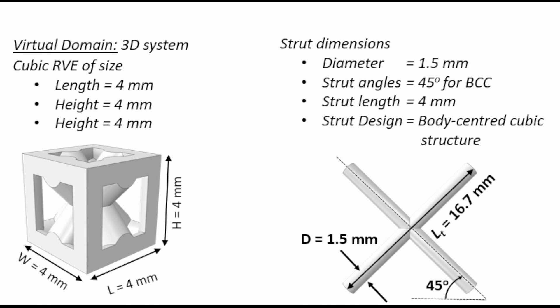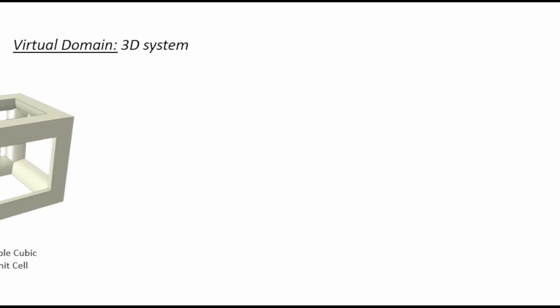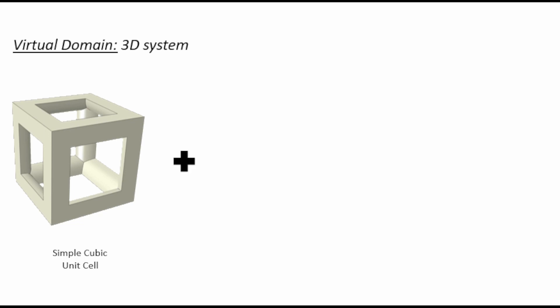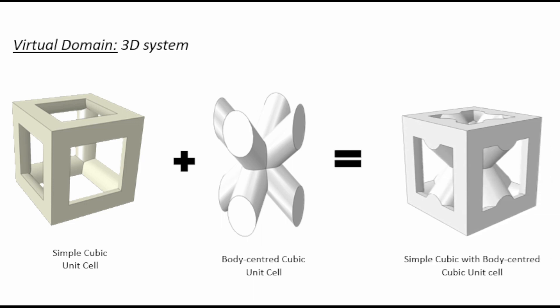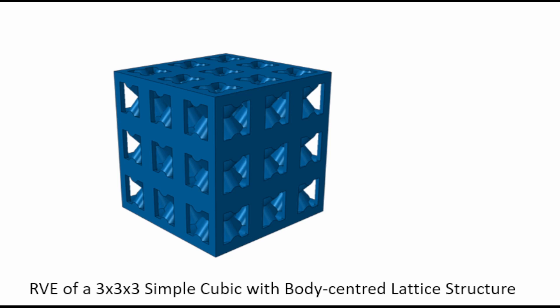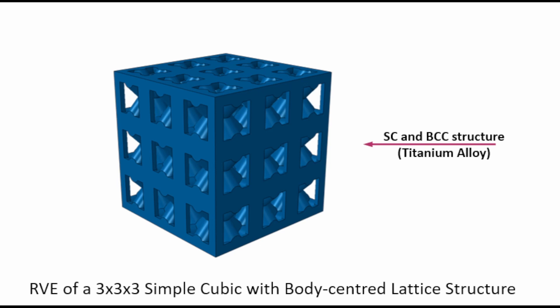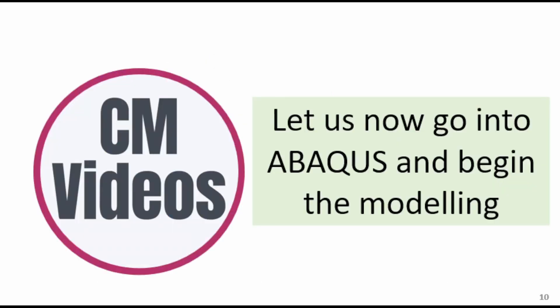So if we look more closely at the BCC, what we're going to do is create the strut slightly bigger than the original 4 millimeters — a little bit longer — so that in the end we'll trim off the central region, giving us a nice clean structure. So first we create the simple cubic cell, then we combine that with the body-centered cubic unit cell, and finally get the assembly. This is a typical example of results: a 3x3x3 simple cubic with a body-centered lattice structure, which we can model using a titanium alloy. Let's now go into Abaqus and begin this modeling.